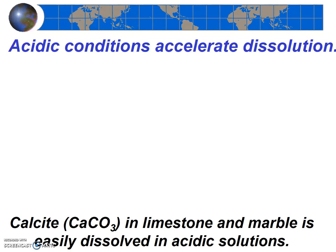This is especially problematic for shelled organisms. Most shelled organisms make their shells out of the mineral calcite, or another closely related mineral, and calcite readily dissolves under acidic conditions. As the Earth's oceans become more acidic, shelled organisms will have a harder time surviving. This may endanger many other life forms that are dependent on the shelled organisms.